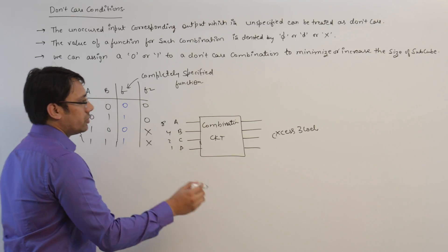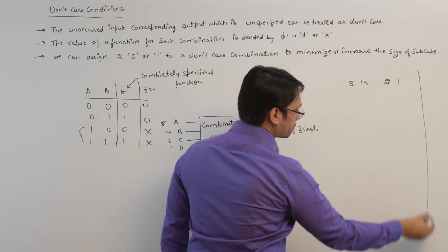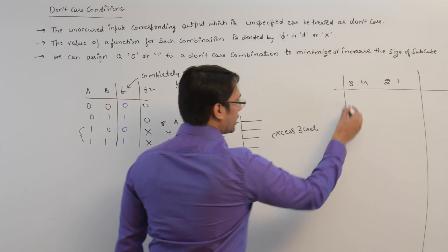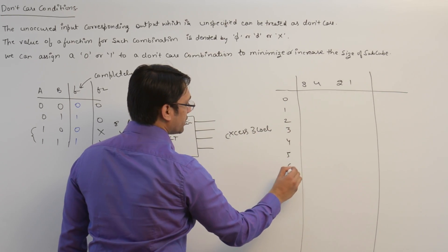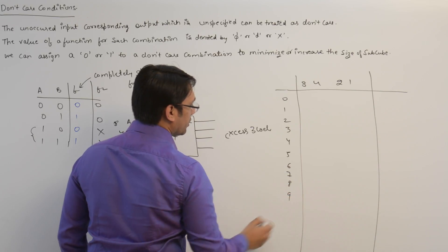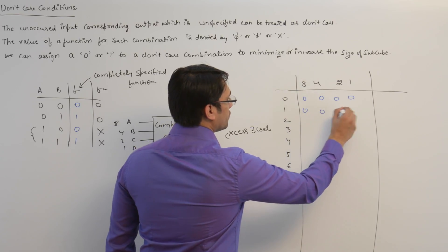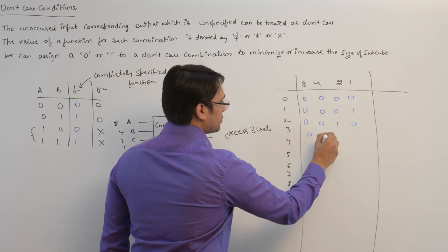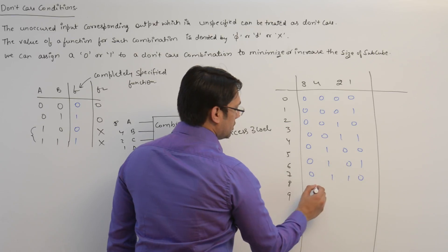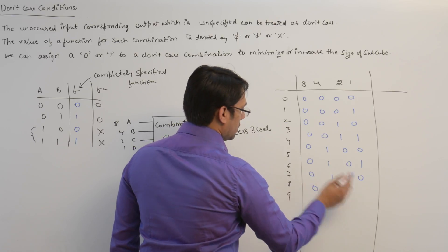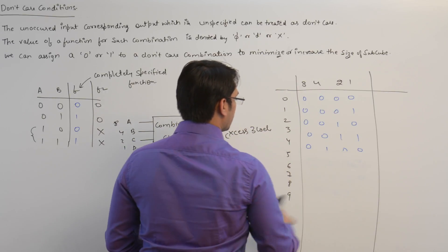The 8421 code has weights 8, 4, 2, and 1. Using this code we can represent the numbers 0 through 9. For example, 0 is represented as 0000, 1 as 0001, 2 as 0010, 3 as 0011, and so on.